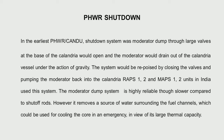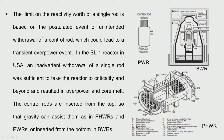For PHWR shutdown, the first system is the control rods. The second is the moderator dump system. In the PHWR, the fuel rods are in a pressure tube covered with a calandria tube, and the whole assembly is in a vessel containing the moderator heavy water. At the bottom of some reactors, there are dumping ports through which the moderator can come out — opening those ports causes the moderator level to drop, thereby shutting down the reactor.